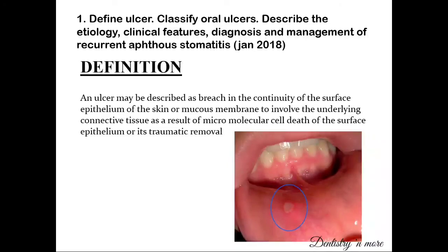When going about with the definition of ulcer, there are two definitions that have been given — one from the Burkitt's oral medicine textbook, and Ravi Kiran Angol has also given a description. The ulcer is defined as the breach in the continuity of the surface epithelium of the skin or the mucous membrane to involve the underlying connective tissue, as a result of micromolecular cell death of the surface epithelium or its traumatic removal.